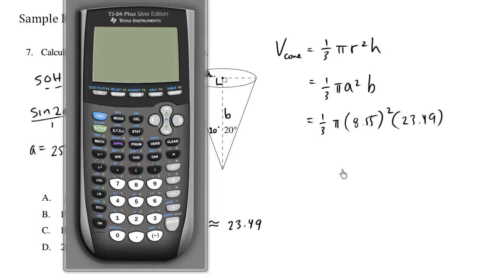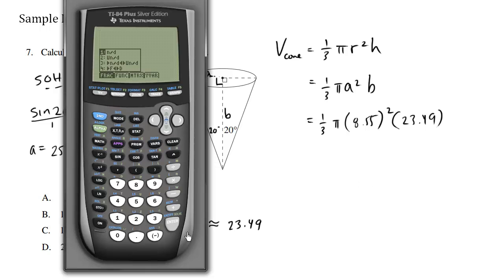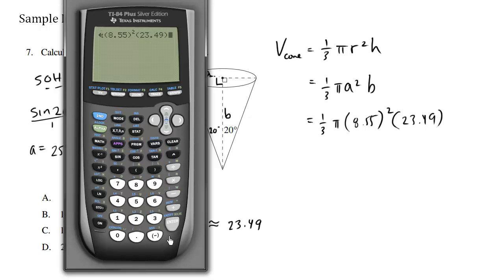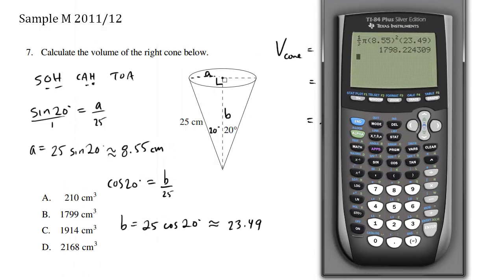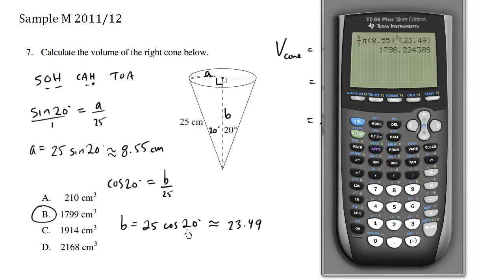We punch into our calculator: one third times pi times 8.55 squared times 23.49, and our final answer is approximately 1,798. That choice is the closest answer. In retrospect, I probably should have kept a few more decimal places to get the exact answer.